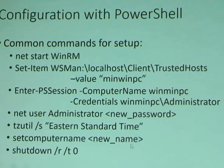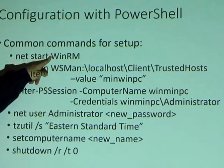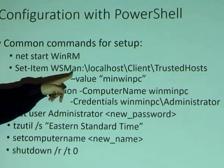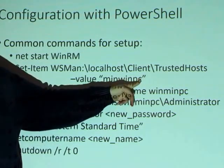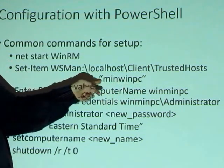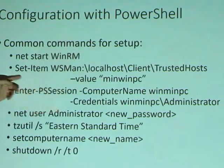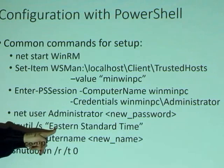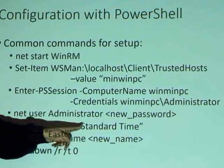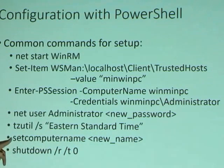You have to start up Windows Remote Manager, then set the trusted hosts — a comma-delimited list with no spaces of IP addresses or machine names. If you have three Pis you need three entries. Then you run Enter-PSSession, give the computer name and password. From there you can set the password, change the timezone from the default Pacific Standard Time, set the computer name, reboot, launch applications, and set them as default — everything from the portal you can do via PowerShell or SSH.